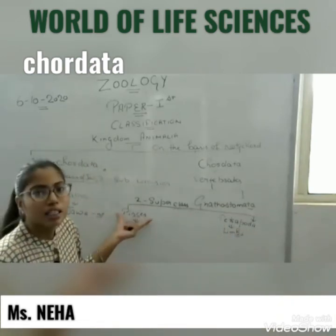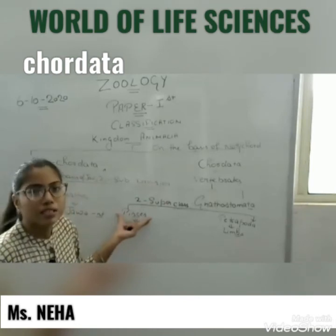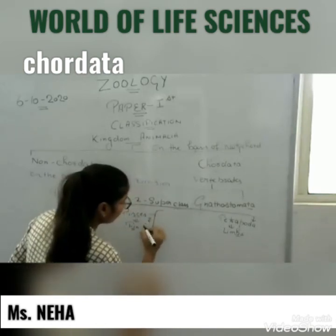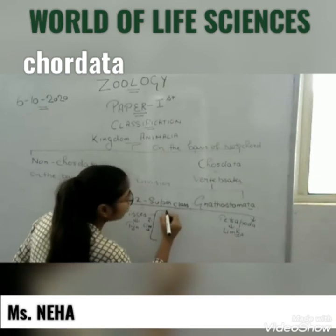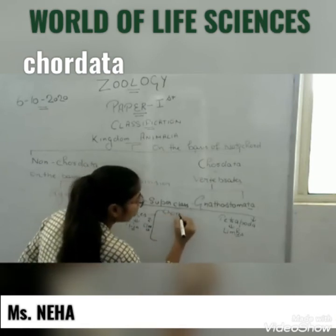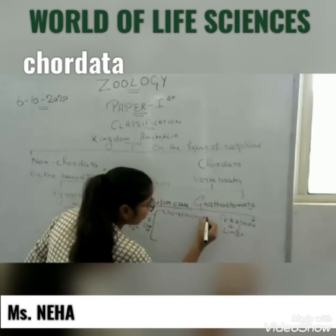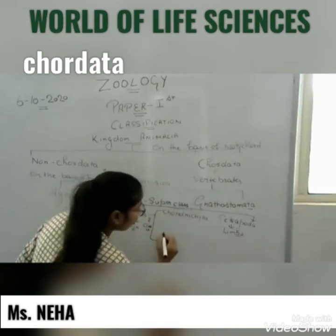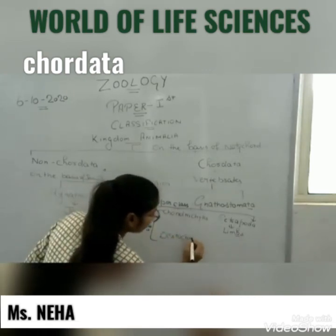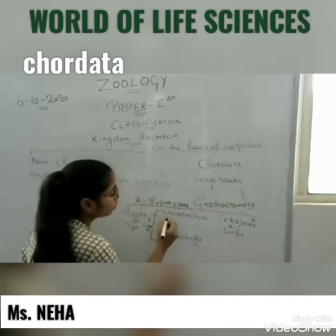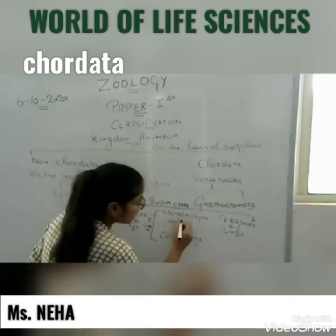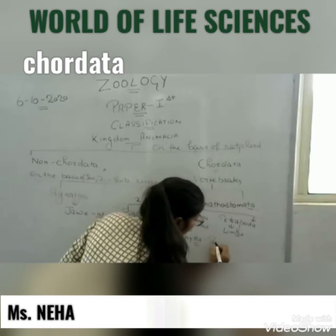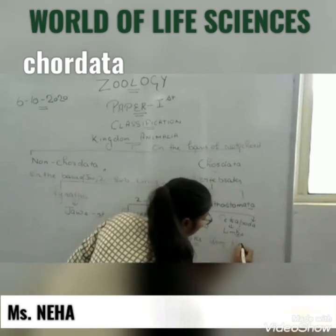Pisces is classified into two subclasses on the basis of the endoskeleton. One is Chondrichthyes, which means cartilaginous fish. And second is Osteichthyes, which means bony fish.